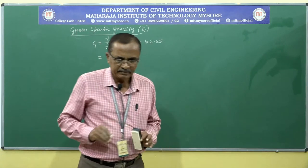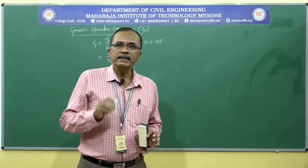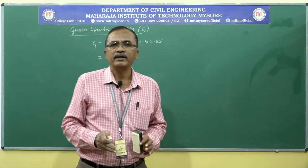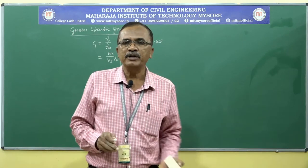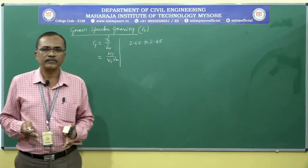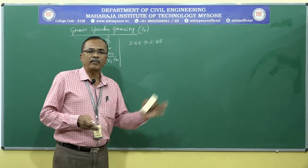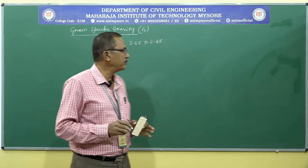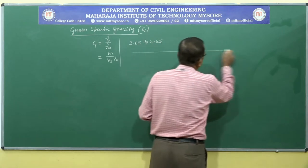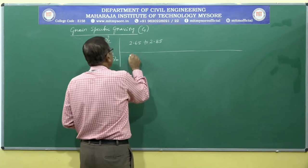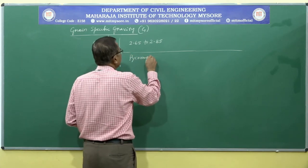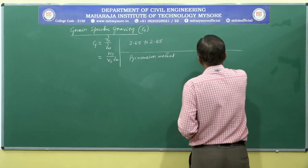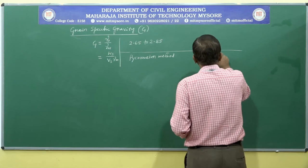Specific gravity can also be used to classify the soil. Higher the value of specific gravity means fine-grained soil, and lower the value of specific gravity means coarse-grained soil. As it is an important index property, it is very much required to know the specific gravity of a particular soil encountered in the field, whether used as a foundation material or as a construction material. Specific gravity can be determined in the laboratory by two methods: the pycnometer method and the density bottle method.